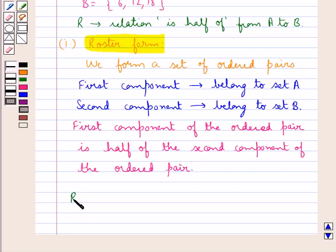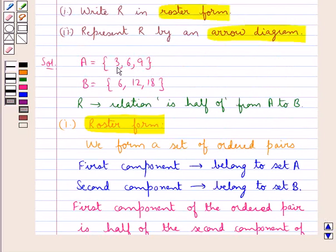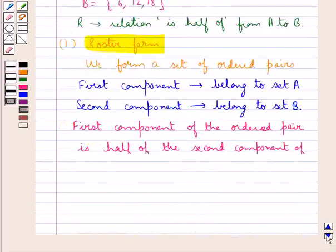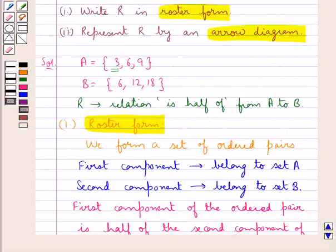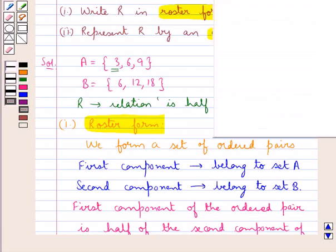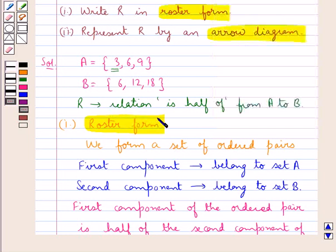We write R as a set of ordered pairs. For the first ordered pair, the first component is from set A — let's take it as 3. The second component is from set B such that 3 is half of it, meaning 2 times 3 equals 6. So 3 is half of 6, and the first and second components are related by relation R.